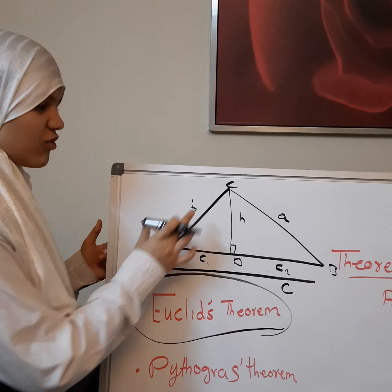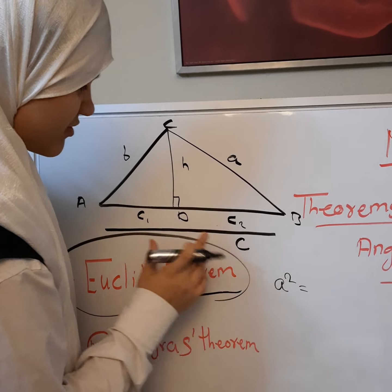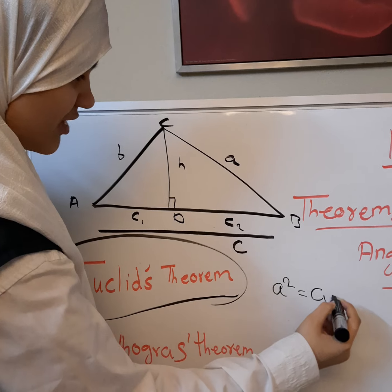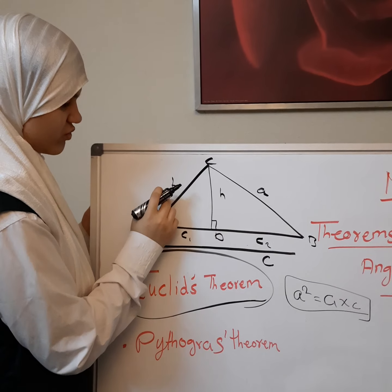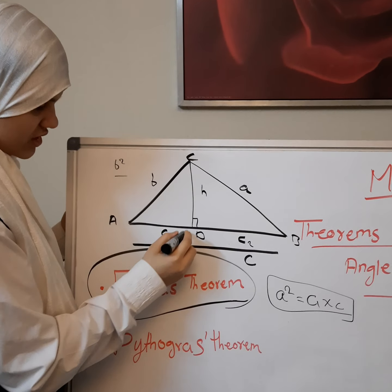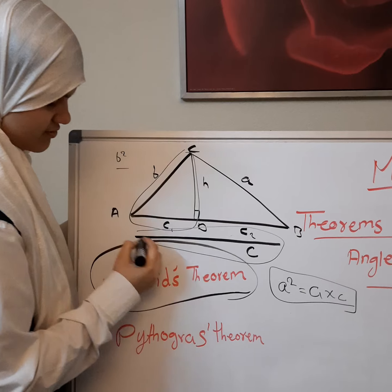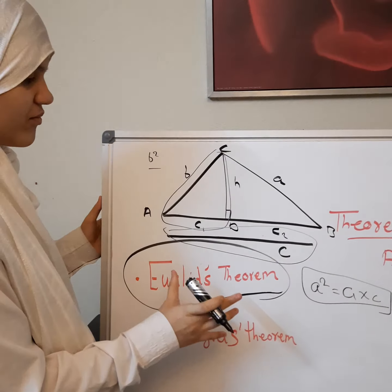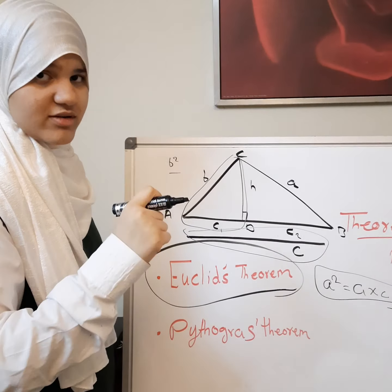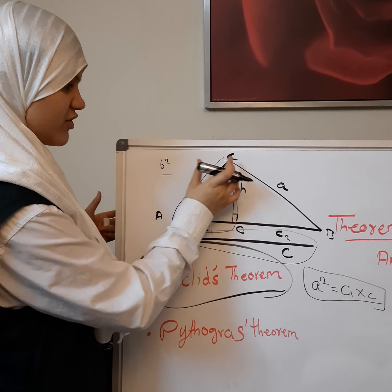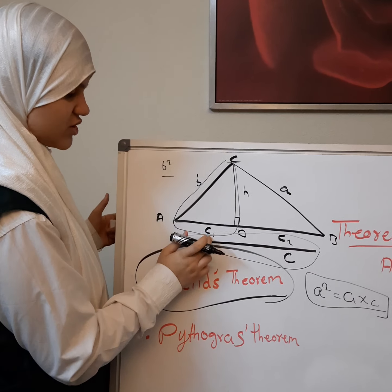Now, how do we solve using the equality theorem? The formula is: a squared equals c1 times c. This is because we relate each leg to the product of the adjacent hypotenuse segment and the full hypotenuse c. The equality theorem has several formulas — one for each side or length.